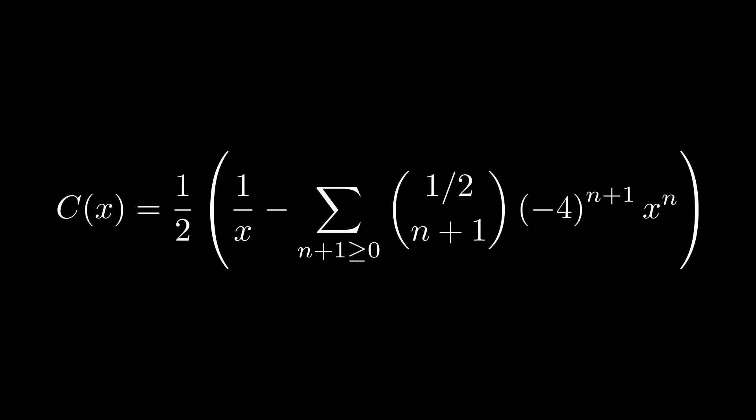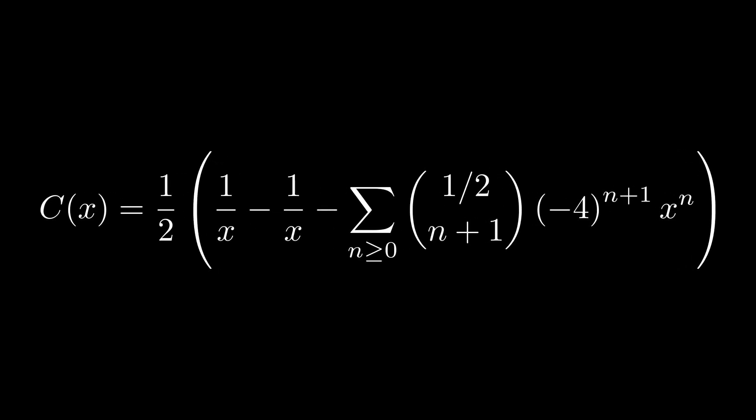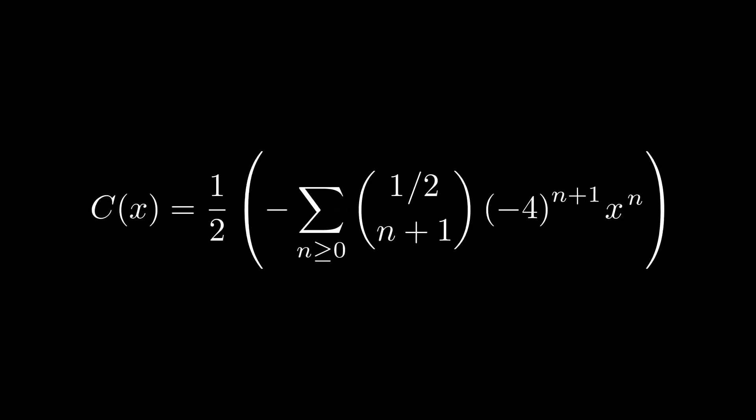We'll apply now the following index shift in the series. Observe that the very first term in the series, which corresponds to the index of minus 1, gives us a 1 over x. And thanks to the negative sign outside the series, we may cancel it with the already existing 1 over x. And so the whole thing simplifies to the following.